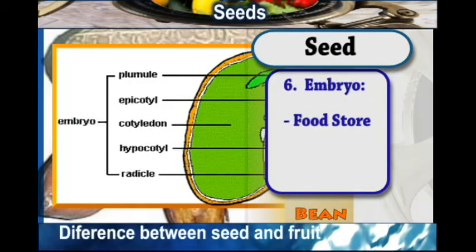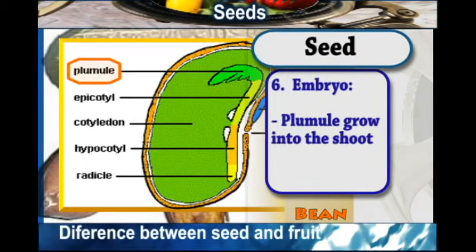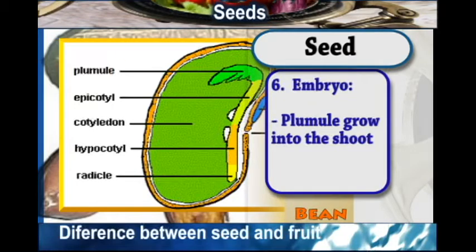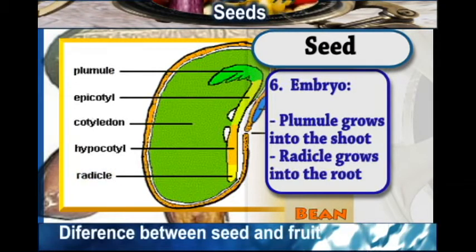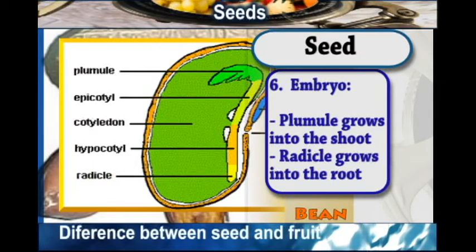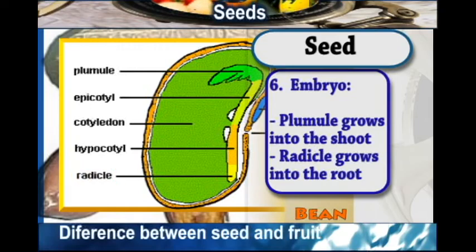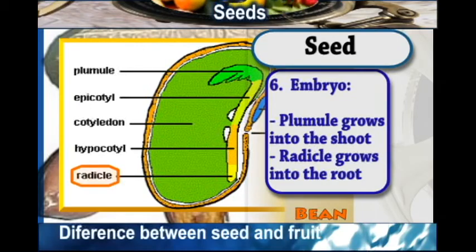Then we have the embryo. When we talk of the embryo, we are referring to the plumule, which grows into the shoot, and also the radicle, which develops into the root. Those are the different parts that we find in a seed.